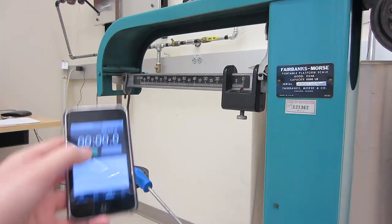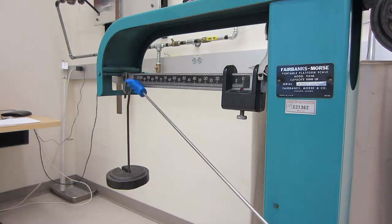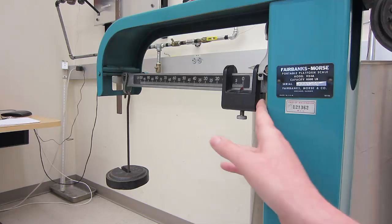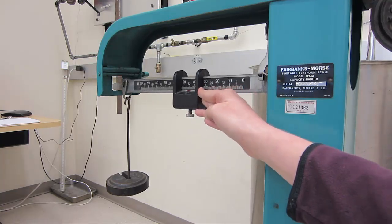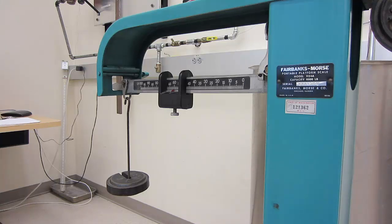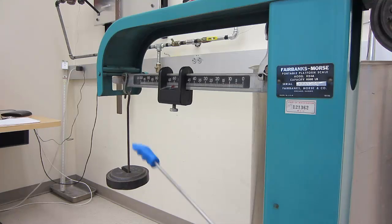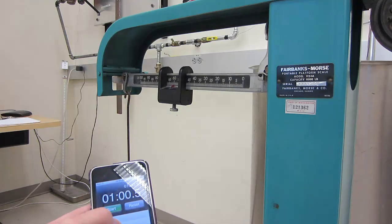When the scale beam rises, the scale is at the equilibrium position at that moment. Start your stopwatch. Then select the weight of water sample by shifting the slider along the scale beam. That increases the counterweight. When the platform scale again goes to equilibrium position, stop your watch.